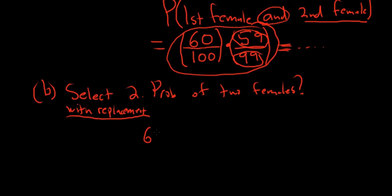Same thing - first female and second female. For the first female, it would be 60 ways to pick a female, 100 ways to pick a person. And the second one is female, except this time it's with replacement. So you put someone back. So it's still 60 ways to pick a female, 100 ways to pick a person.